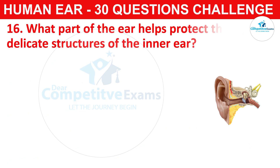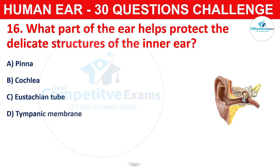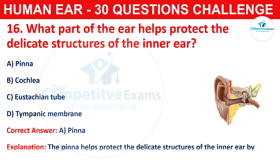Question number sixteen: what part of the ear helps to protect the delicate structures of the inner ear? Your options are pinna, cochlea, Eustachian tube, or tympanic membrane. The correct answer is A, that is pinna. The pinna helps to protect the delicate structures of the inner ear by directing sound waves into the ear canal.